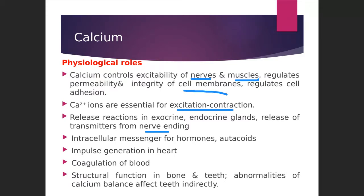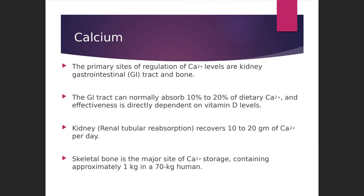So any abnormalities in calcium levels in the body might affect any of these organs — the muscles might be affected, the heart might be affected, blood coagulation might be affected, release of hormones might be affected, release of neurotransmitters might be affected, and bones and teeth might be affected. So the ion calcium plays many important roles in the body. Now, from where is this calcium absorbed? Calcium is absorbed from the kidneys, GIT, and bone.